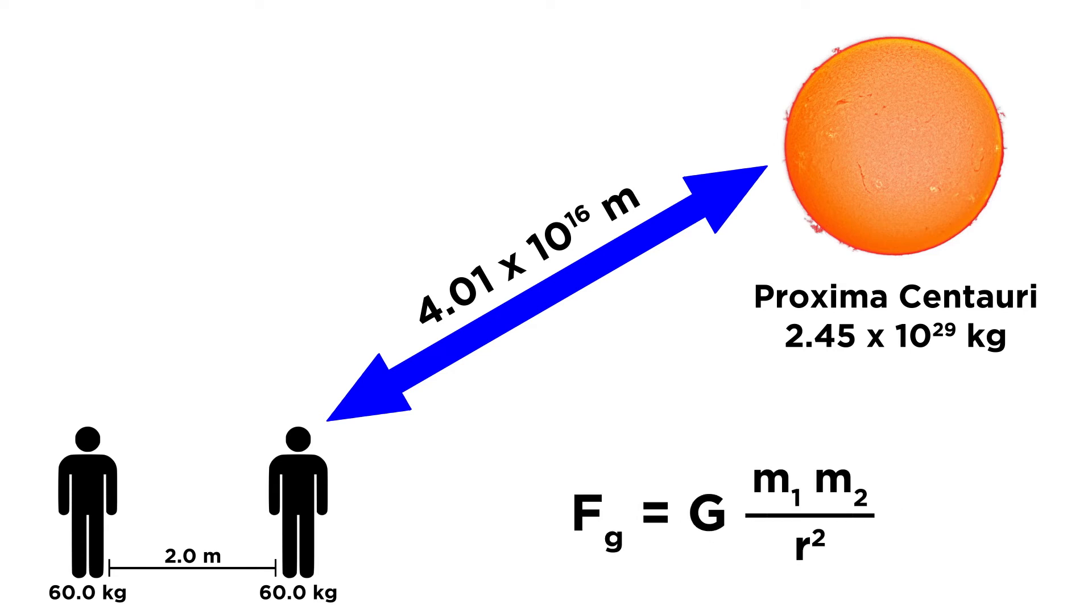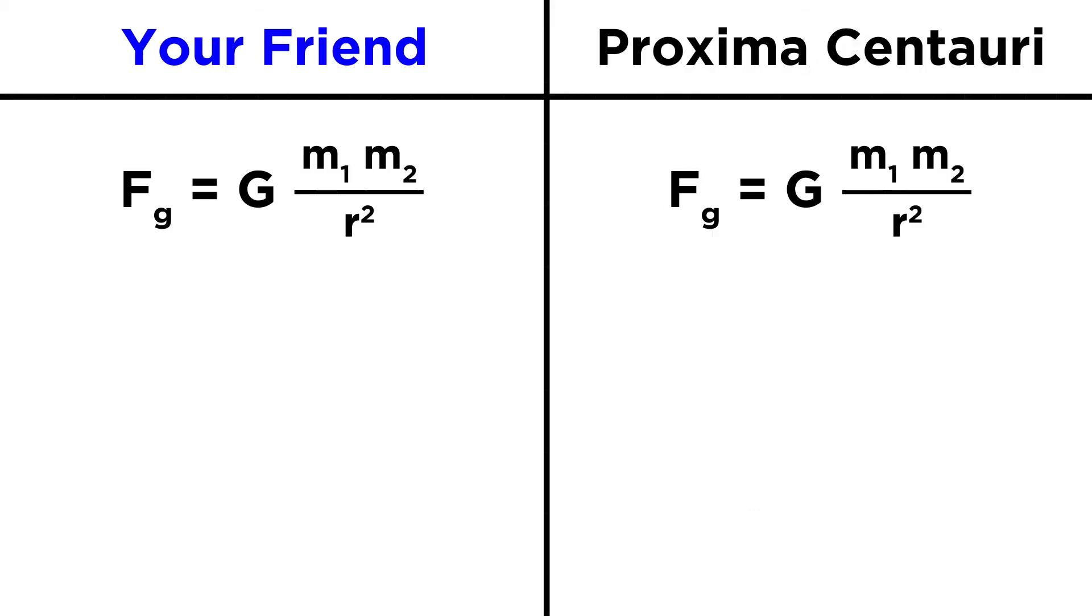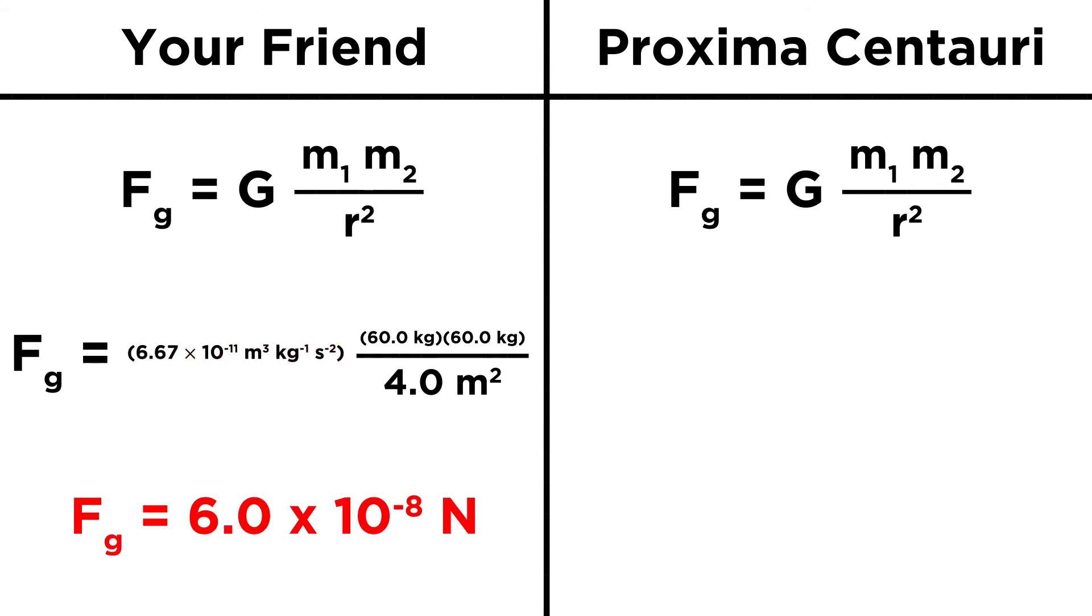This is easy to solve if we know this equation. All we do is plug in the masses and distances involved, as well as the gravitational constant. First for your friend, we plug in sixty and sixty as the masses, and two meters as the distance between you. We square that and evaluate, and we should get six times ten to the negative eight newtons.